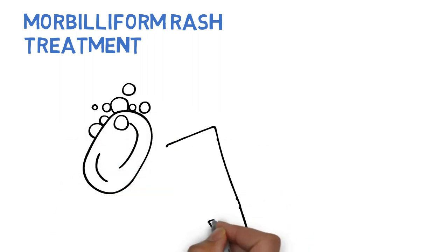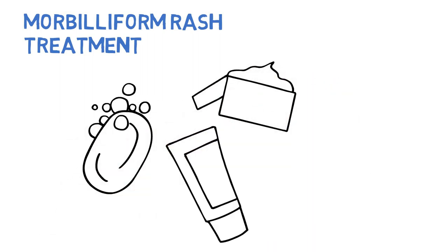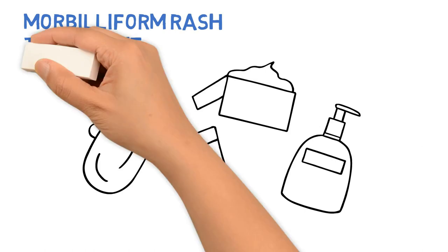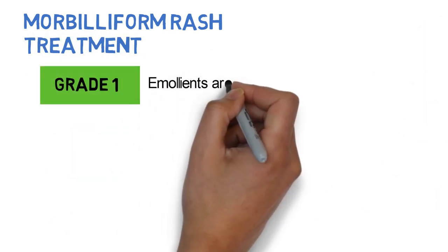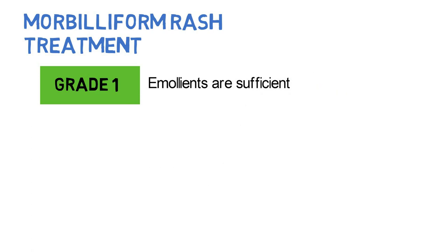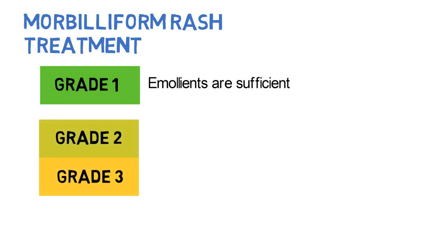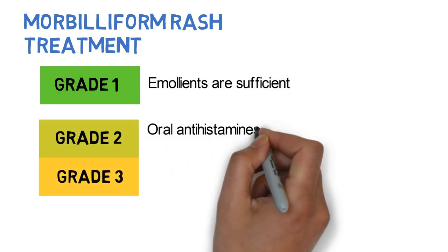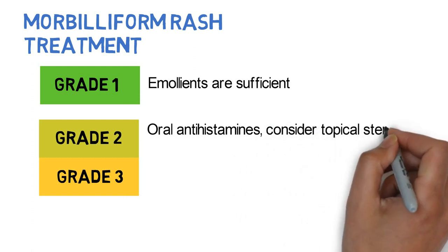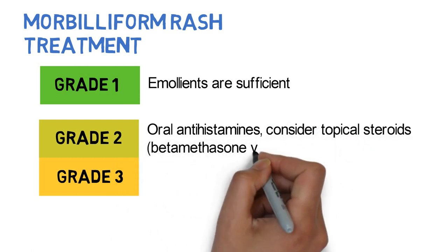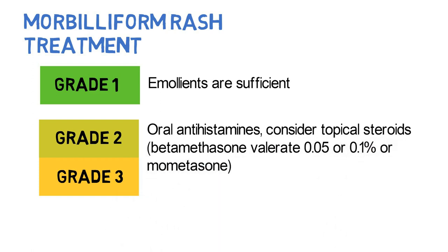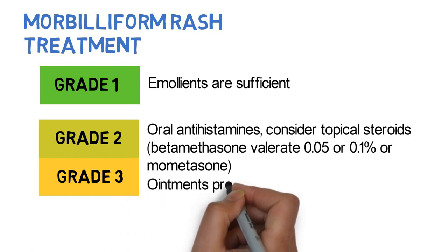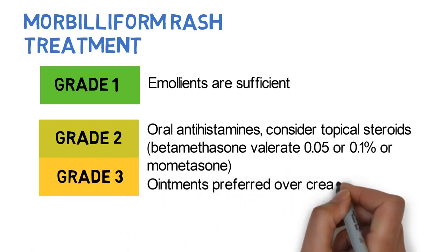For treatment, counsel the patient on gentle skin care. You can refer to our videos on tips for gentle skin care for more details. For grade 1 toxicities, emollients are sufficient. For grades 2 and 3, the patient can use oral antihistamines. Mid- to high-potency topical steroids like betamethasone valerate 0.05% or 0.1%, or mometasone, can also be considered. Ointments are preferred over cream since they are generally more effective.